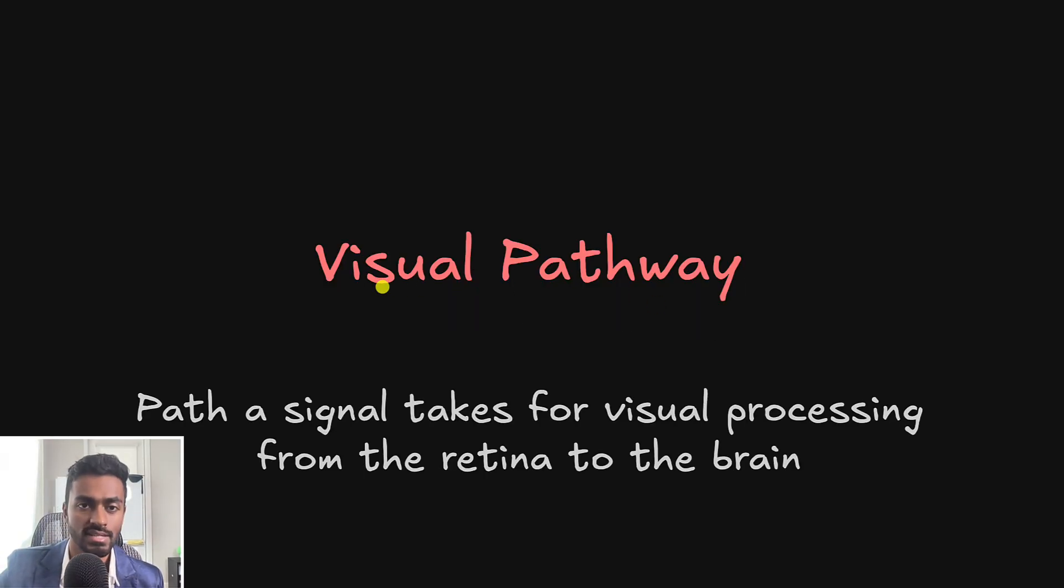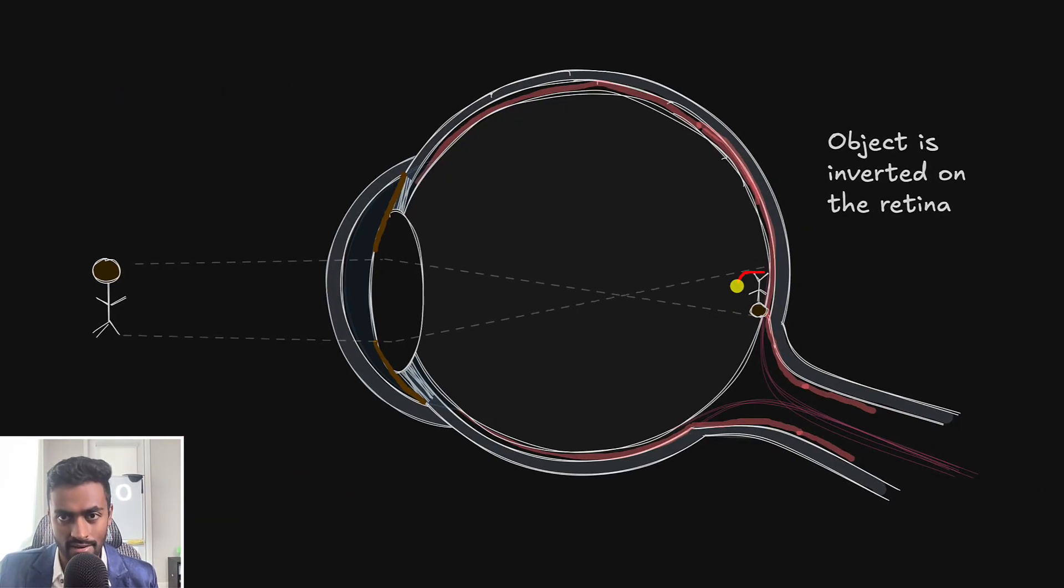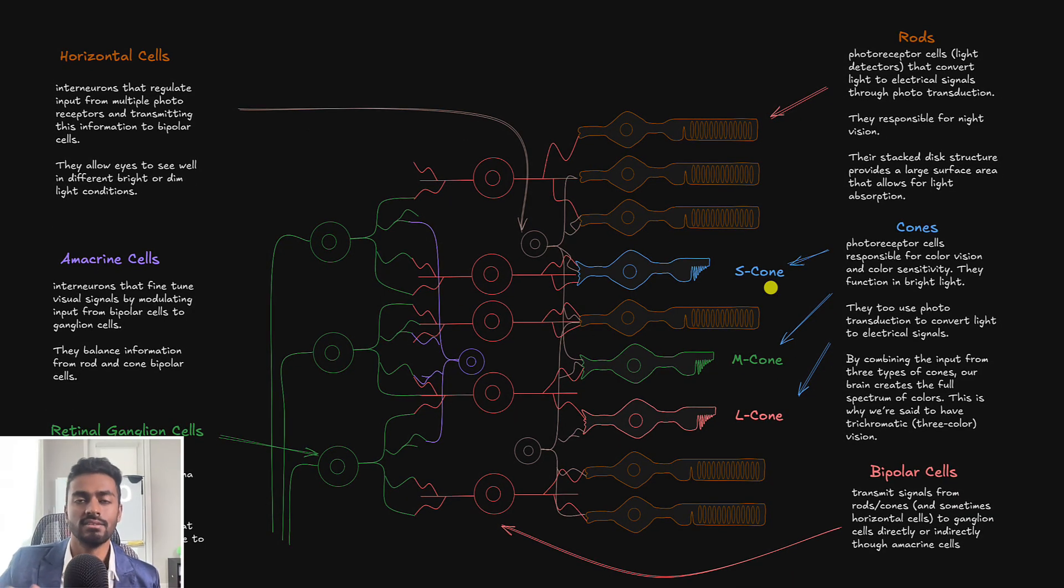In this video we discussed the visual pathway which is the path that a signal takes for visual processing from the retina to the brain. And so the way that it does this is first light or photons would pass through the cornea, is refracted by the lens and is going to be projected onto the retina. It's kind of like what we see here so that an inverted image is presented on the retina. But if we were to blow this part up of the retina you'll see that the cells are arranged in a hierarchical fashion where light passes through all of these cells but is mostly absorbed by the photoreceptors at the back of the retina.